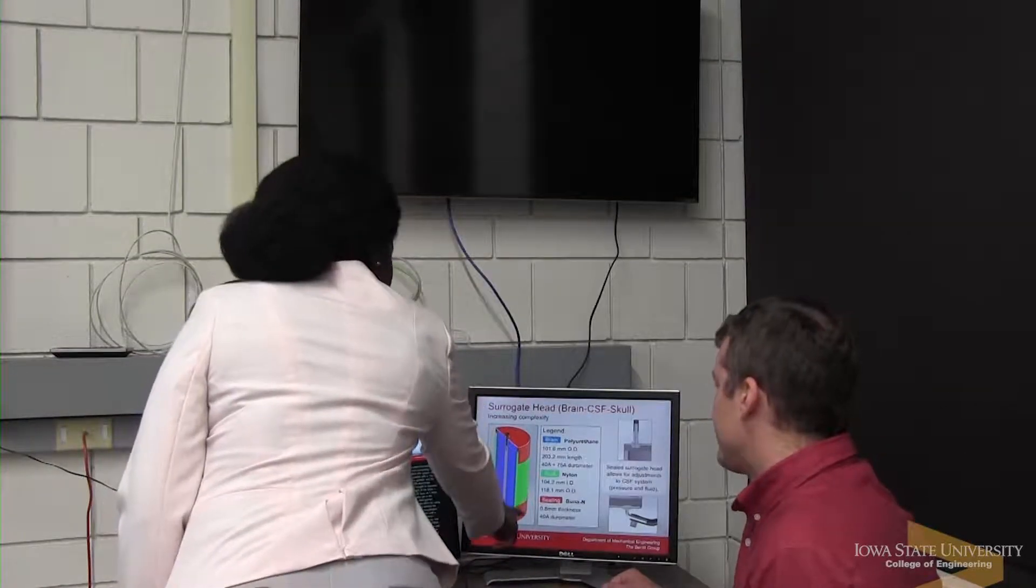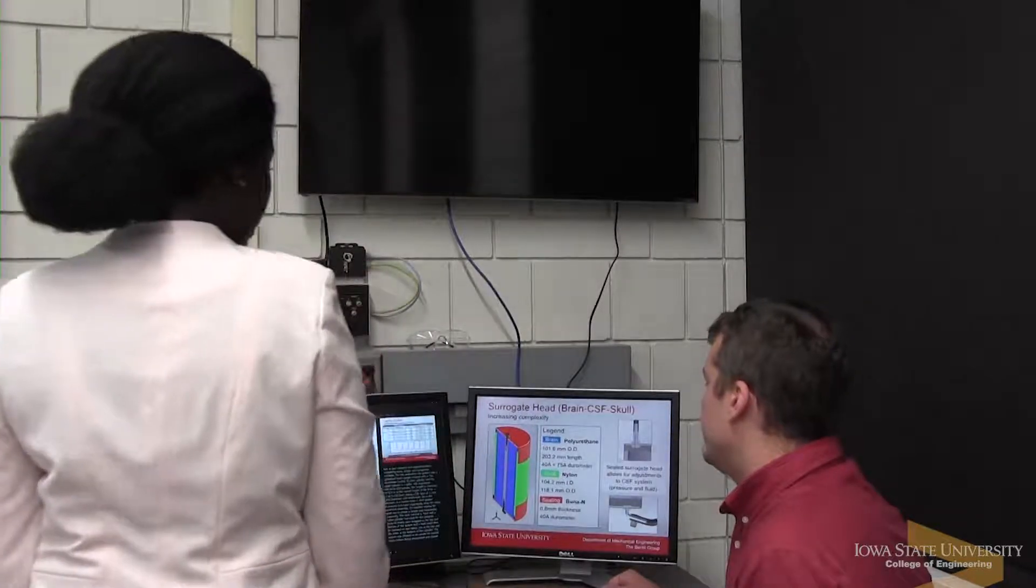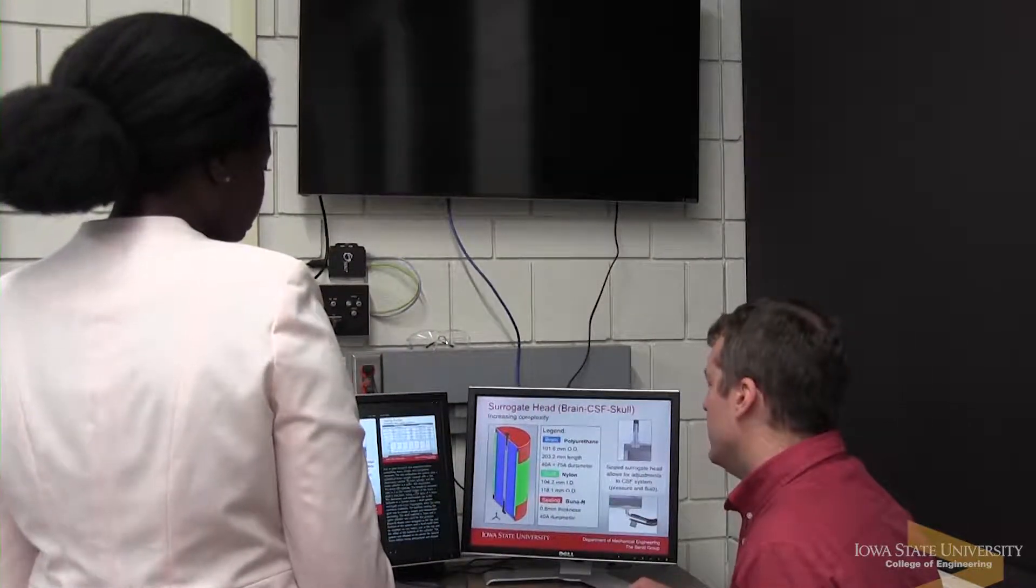Once we have an understanding of how the brain responds due to repeated head impact, we'll then be able to develop improved countermeasures, such as improved helmets, to mitigate injury to the brain, such as concussions.